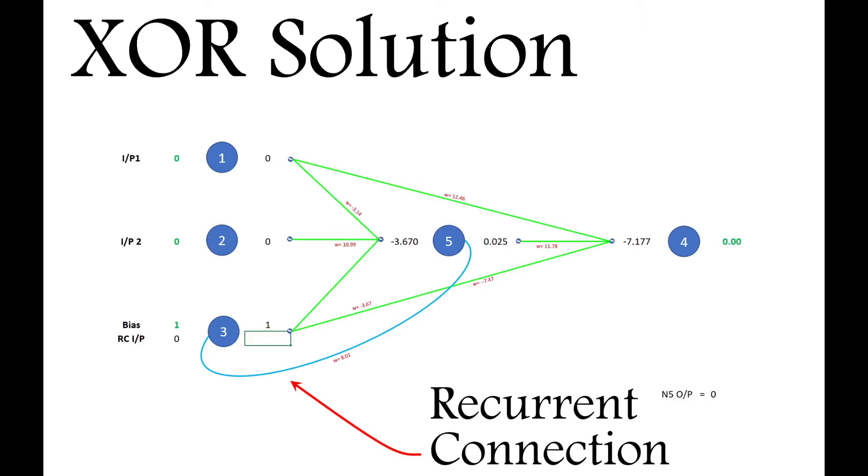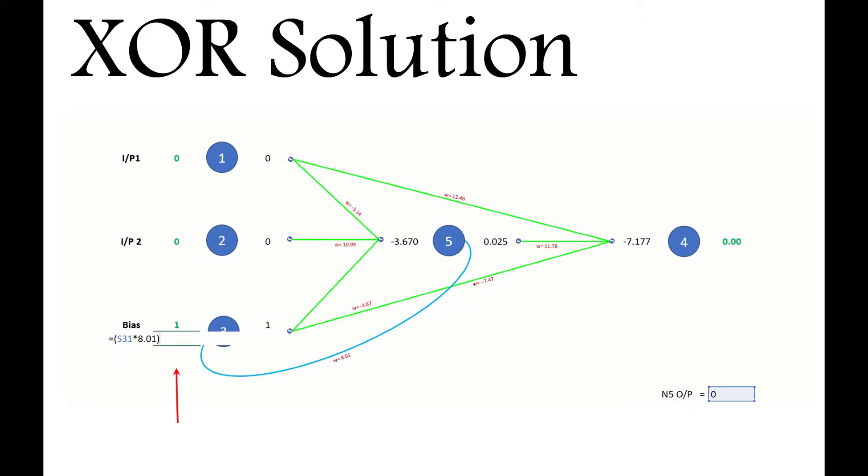Now, I need to fudge things a bit here, as Excel doesn't have a memory, and doesn't know the output from node 5 should reference what happened during the previous iteration, and tends to be a bit temperamental with circular references. So I'll store the correct node 5 output down here, and use it to calculate the input to the recurrent connection. But I'll display it in the same manner the code would use to process the network.